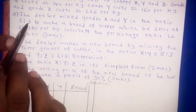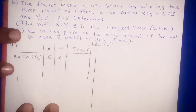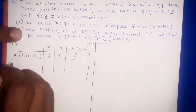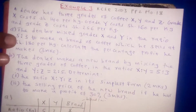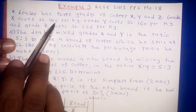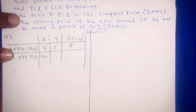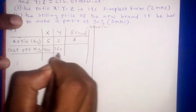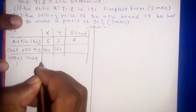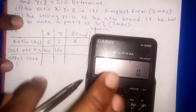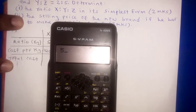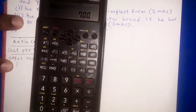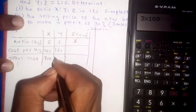The dealer mixes X and Y in the ratio of 5 to 3. The total ratio will be 5 plus 3, which equals 8 for the brand. Then we go to the cost per kg of X and Y. Grade X costs 140 shillings and grade Y costs 160 shillings. For the total cost, we multiply: 5 times 140 gives 700 shillings, and 3 times 160 gives 480 shillings.